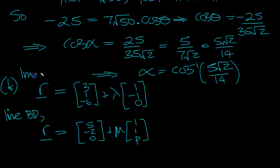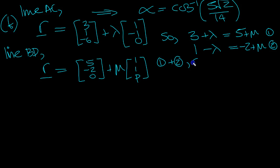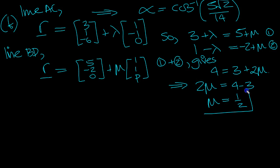So these two lines, AC is this, line BD is this. So we've got the point of intersection now. So I'll put it over here to save some space. 3 plus lambda is equal to 5 plus mu. And then the next one, 1 minus lambda is equal to minus 2 plus mu. These are the first two. Add them, and then the lambdas will cancel each other out on the left. 4, 5 minus 2 is 3, and 2 mu's. So that tells us what mu is. 2 mu is equal to 4 minus 3, and so mu is equal to 1 over 2. Mu is a half.